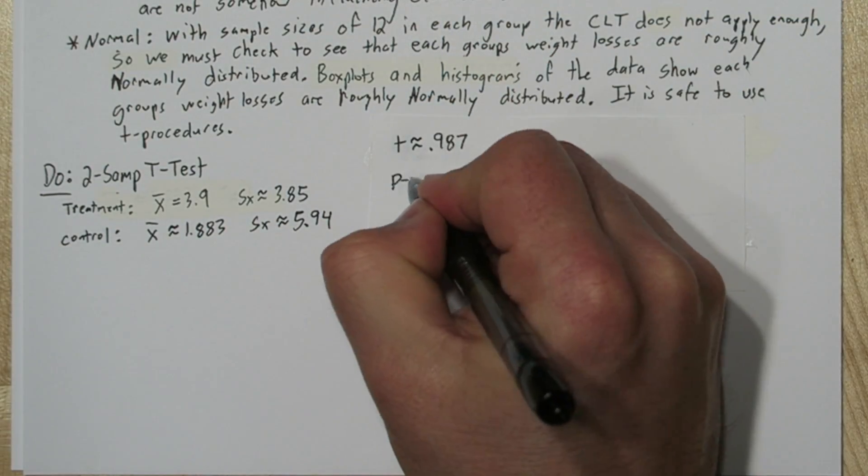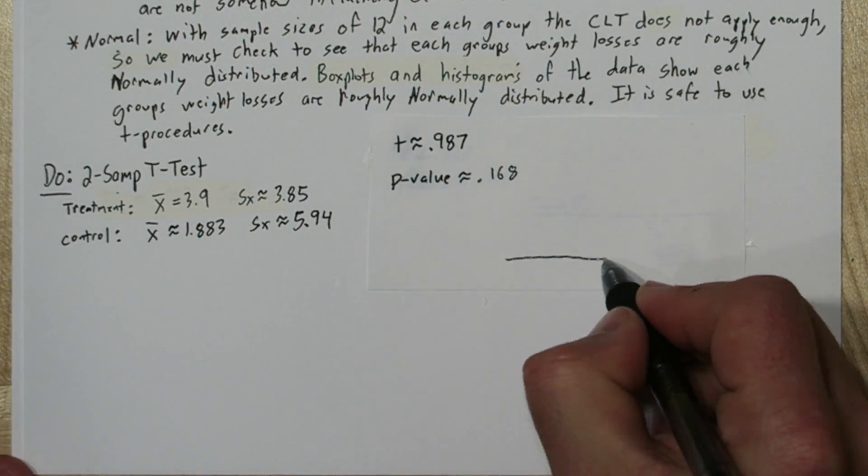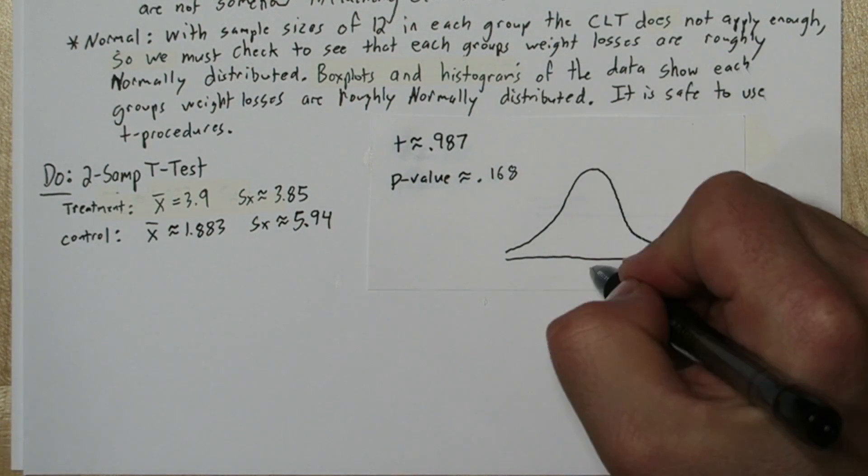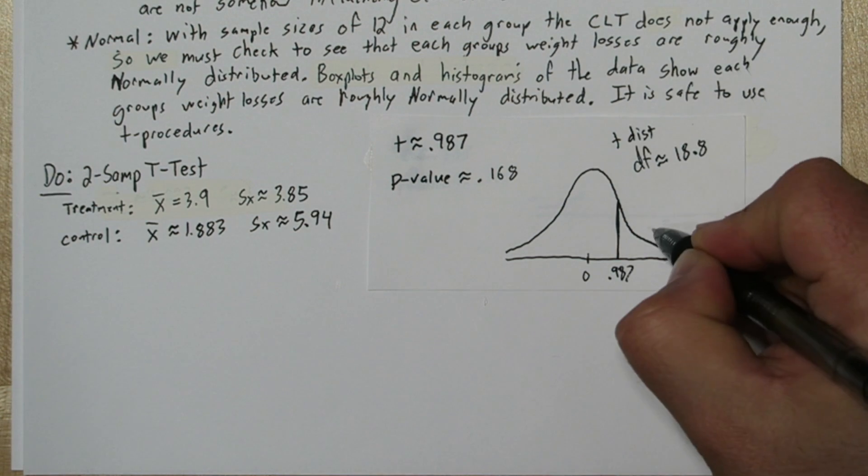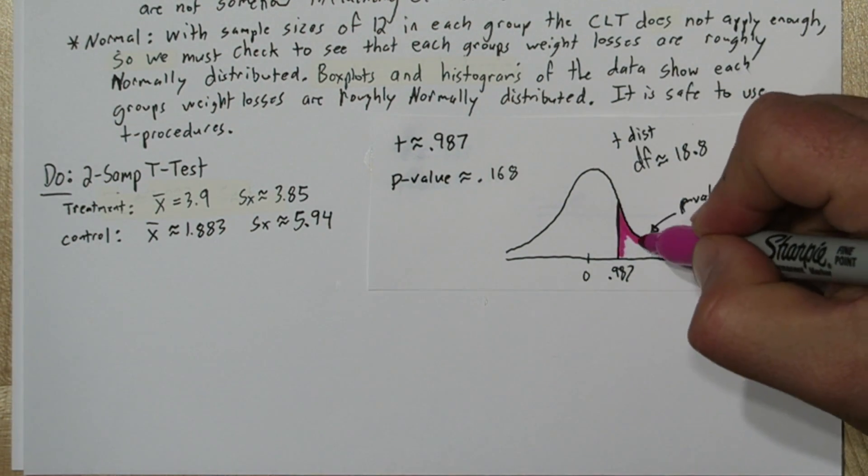And we're also going to draw a t-distribution with about 18.8 degrees of freedom. And we'll mark off our test statistic, 0.987, and this area to the right is our p-value.